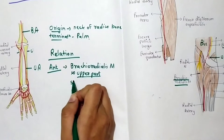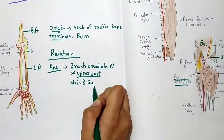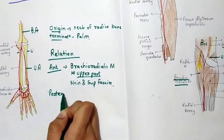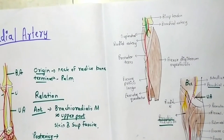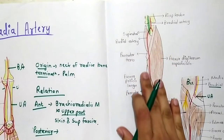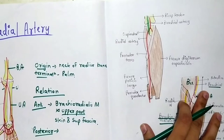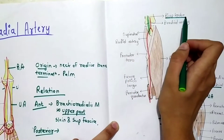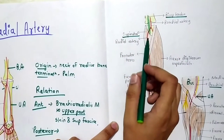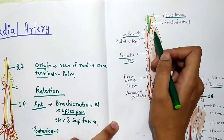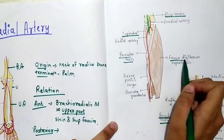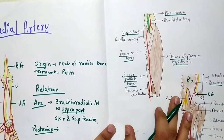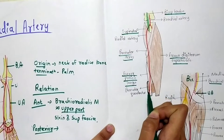In the lower part there is skin and superficial fascia. For the posterior relation, all the superficial muscles covering this region are removed to make the posterior relations clear. Starting from above, there is first the bicep tendon, then the supinator muscle, then coming down there is pronator teres muscle, then flexor digitorum superficialis muscle.